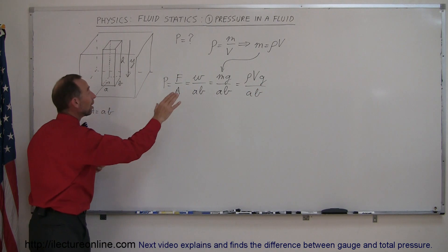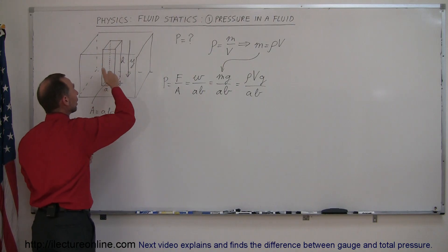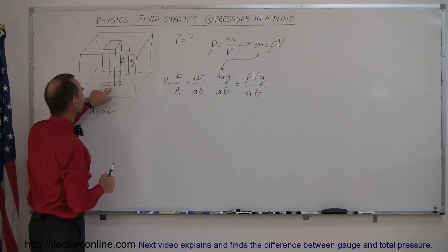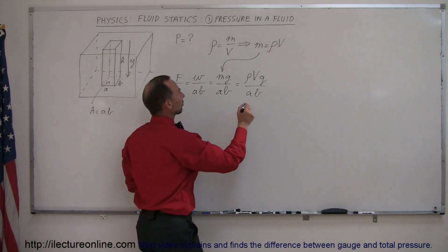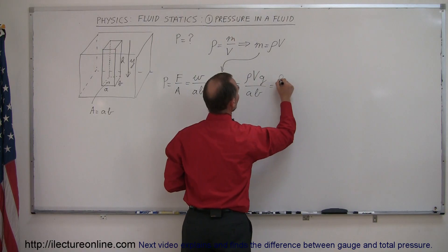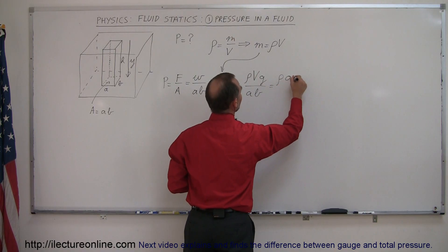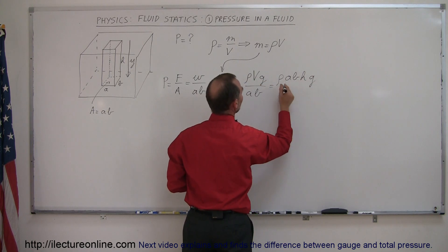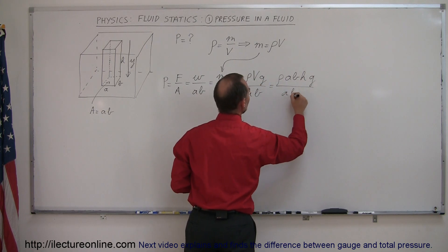So the volume means the volume of this water column, and the area underneath is simply still A times B. Now, of course, the volume of a cube is equal to the area of the base times the height. So this can be written as the density times the area of the base, which is A times B times the height, which is H times G. So volume is replaced by this, divided by A times B.